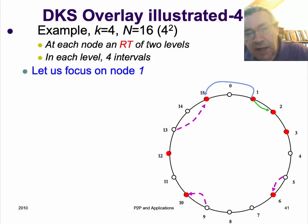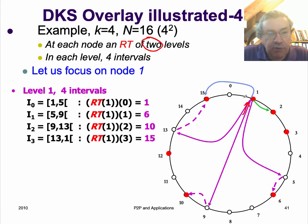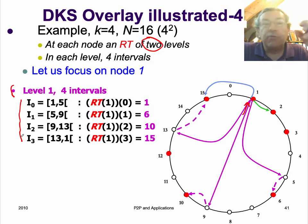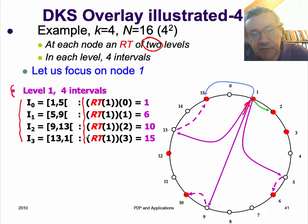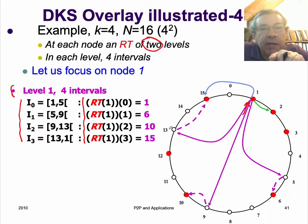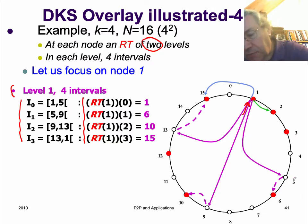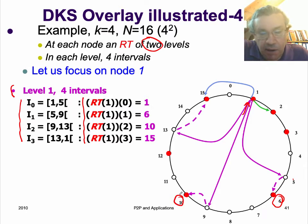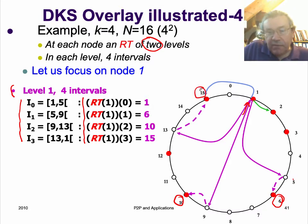Using our 16-node identifier space, the routing table will have two levels. Focusing on node 1: it has both successor and predecessor pointers and a routing table. At level 1, there are four intervals — k equals 4 — so the whole space is divided into 4 in one hop. The values are 1, 6, 10, and 15. Note that the ideal values 5, 9, and 13 are updated to use the first node actually in the system: RT[1,0] = 6, RT[1,1] = 10, and RT[1,3] = 15.